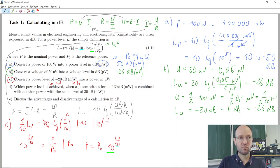And then the last step, or the next step, insert the values. So we get for the power that it's 1 milliwatt multiplied with 10 to the power of minus 20 divided by 10.